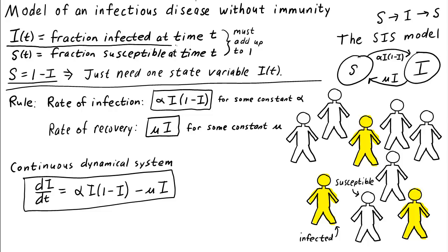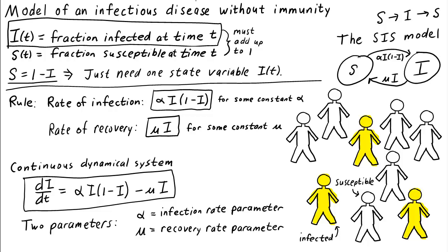The model has a single state variable, i, which is the fraction of infected individuals, and two parameters. We could call the parameter alpha the infection rate parameter, and the second parameter, mu, is the recovery rate parameter. The evolution of the disease will depend on the values of these two parameters. In analyzing this system, we'd like to understand how the behavior depends on these parameters. And that's the subject of the next video.